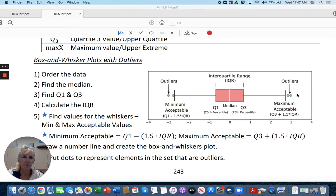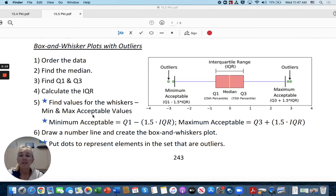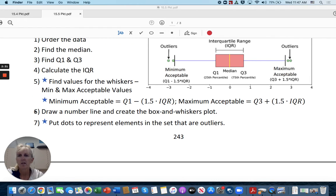So the whiskers are going to be the numbers outside. And then the minimum acceptable is quartile one minus 1.5 times the IQR or interquartile range. The maximum acceptable is quartile three plus 1.5 times interquartile range. Draw a number line and create the box and whisker plots. Put dots to represent elements in the set that are outliers.